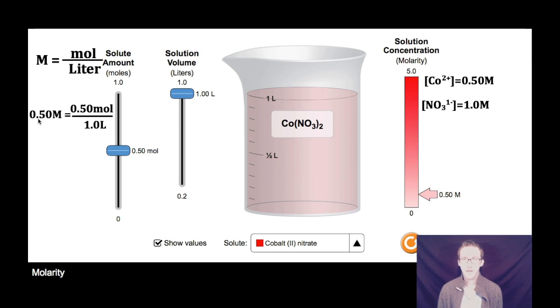Recognize though that the concentration of the cobalt ions is 0.5 molar, while the concentration of the nitrate ions is one molar, because the ratio in the formula is one to two.